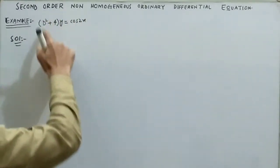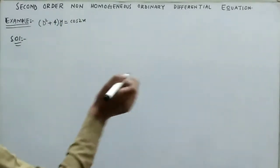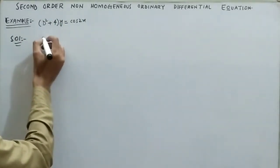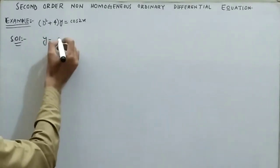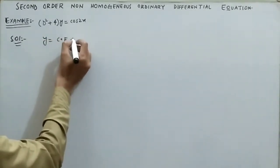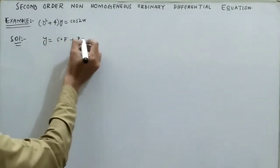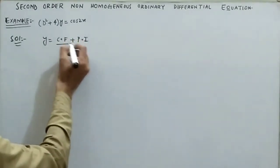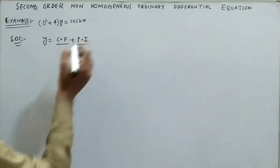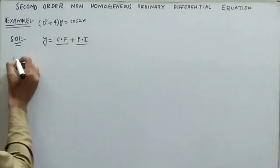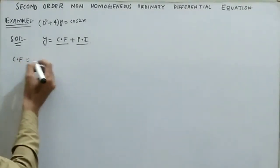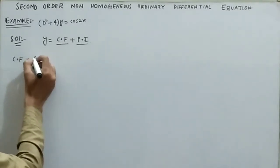Moving to the solution: the complete solution to this type of second order non-homogeneous differential equation is y equals the complementary function plus the particular integral. So first we will find the complementary function, then we will find the particular integral. The complementary function comes from the auxiliary equation.